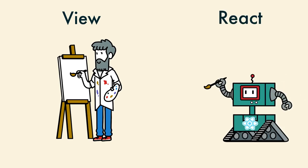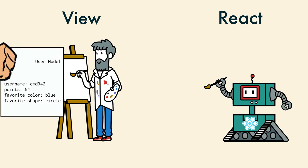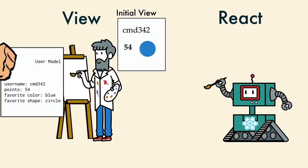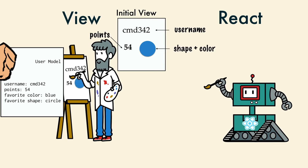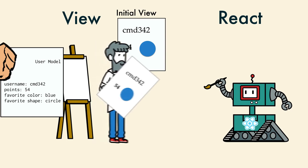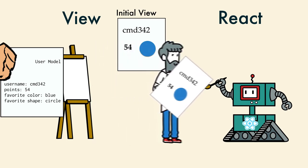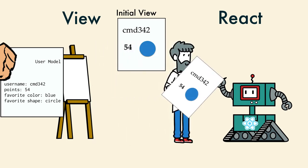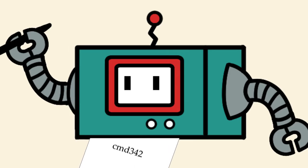They worked together to paint the DOM. The model would hand the view a complete piece of data. The view knew how to render this — username, points, and colored shape. He would draw a quick but accurate sketch. Then he would bring it to React, who would scan it.